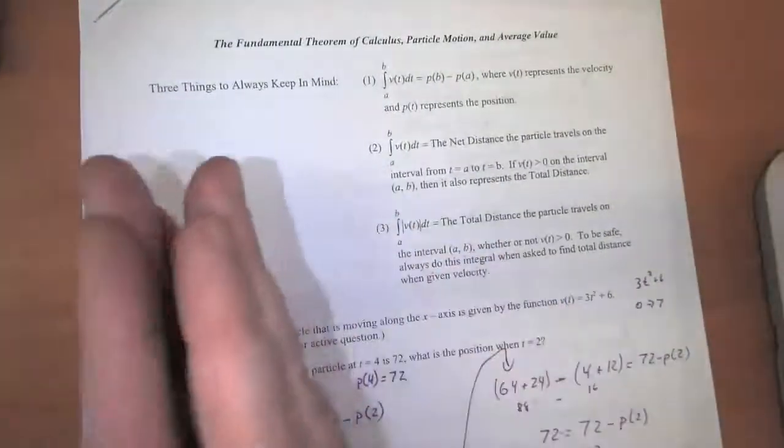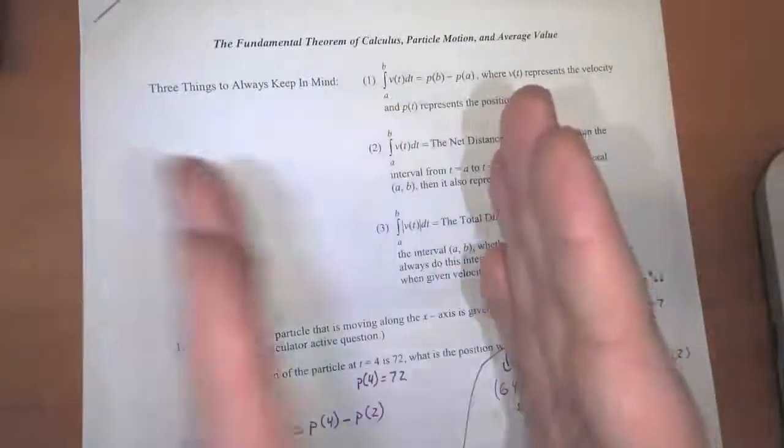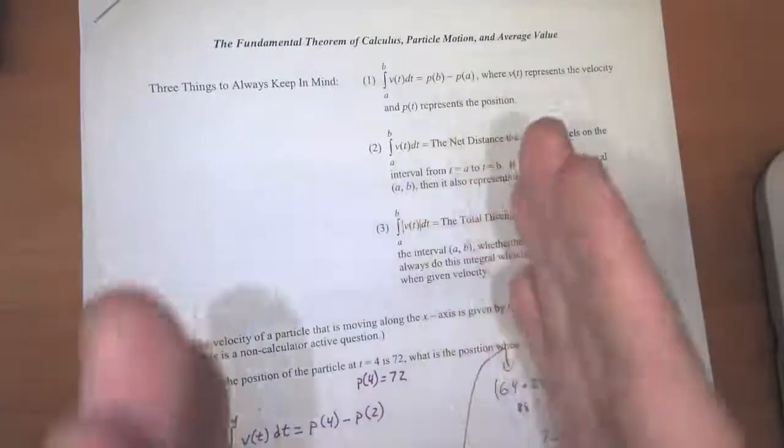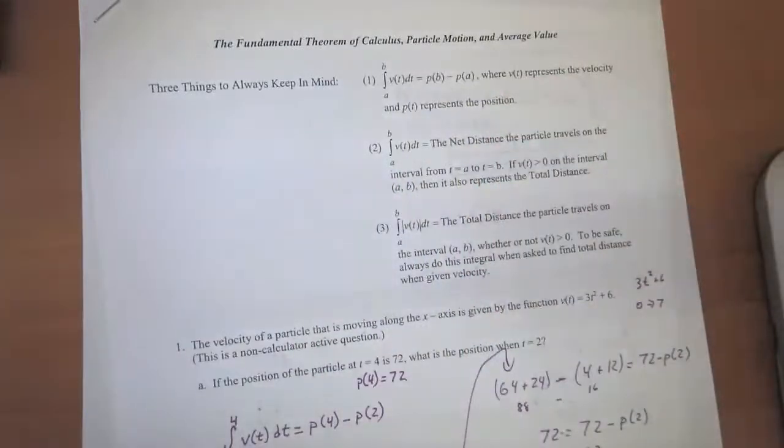But the total distance, we want to talk about the distance moving to the right and the distance moving to the left. We want to add those distances together because we want to know how far the particle traveled, not just the difference between where it started and where it ended.